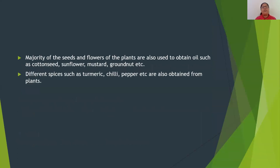Sometimes different parts of the same plant can be used as food. For example, in sunflower the flower is used. For mustard, the leaves are used as food whereas the seeds can also be used. We also saw that oils and spices are obtained from plants — majority of seeds and flowers are used to obtain oil, such as cottonseed, sunflower, mustard, groundnut, etc. Different spices such as turmeric, chili, and pepper can also be obtained from plants.